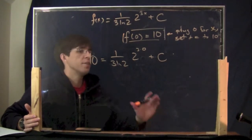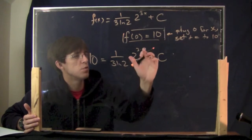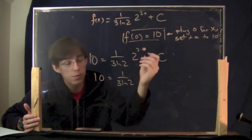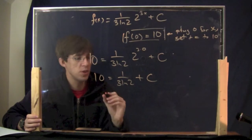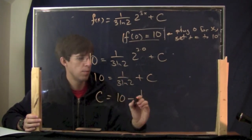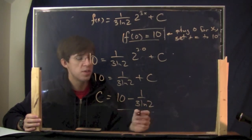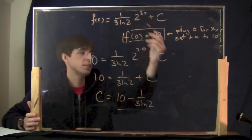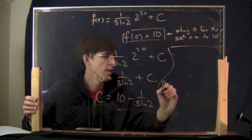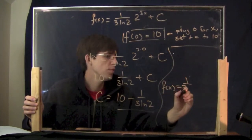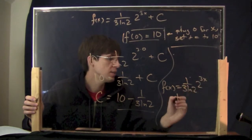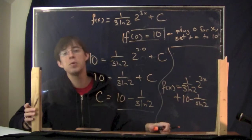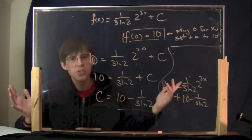Can you solve for c? Yes. 2 to the 3 times 0 is 2 to the 0, which is 1. So it says 10 equals 1 over 3 ln 2 times 1 plus c. Solve for c: you get c equals 10 minus 1 over 3 ln 2. This is a number you can plug into your calculator. So my final answer is: f of x equals 1 over 3 ln 2 times 2 to the 3x, plus (10 minus 1 over 3 ln 2). That's how we solve the initial value problem.